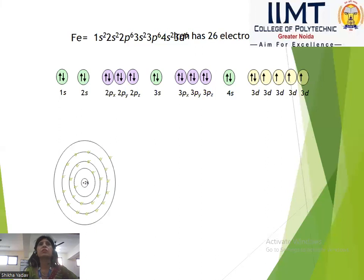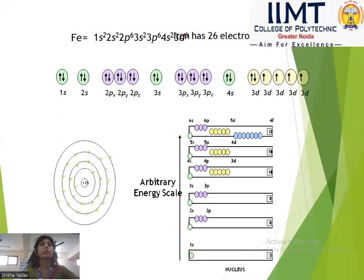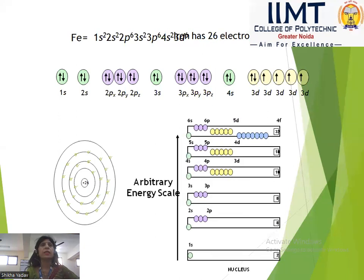Six electrons enter the last section for iron. Looking at the diagram: in the first shell we have 2 electrons, the second shell has 8, then 8, and then in the last we have 4s² electrons. Here is the orbital energy scale.